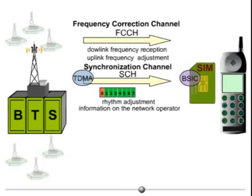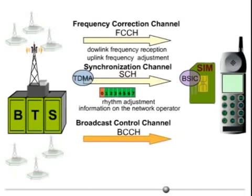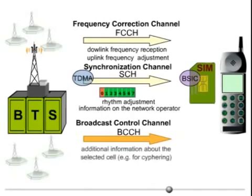While the mobile station uses the FCCH to adjust its frequency and the SCH for synchronization and network identification, the broadcast control channel, BCCH, which is also sent by the BTS, supplies the mobile station with additional information about the selected cell, for example, for ciphering.